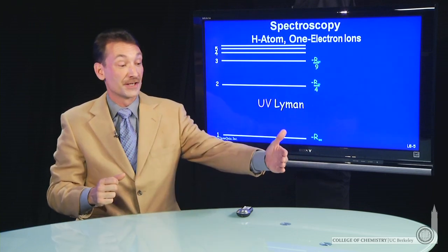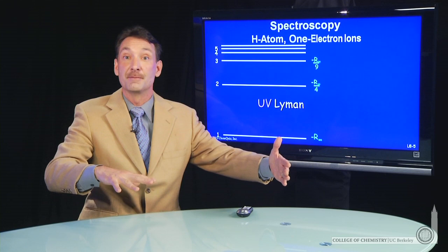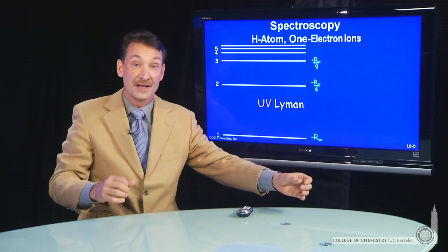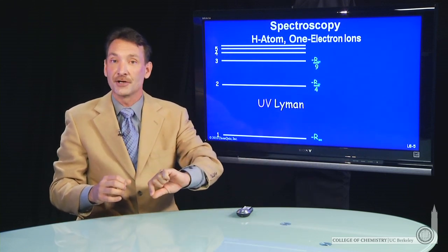When we observe those things, we say there's blue light, or there's an ultraviolet photon being absorbed or emitted. We can infer something about the electronic structure of that atom.